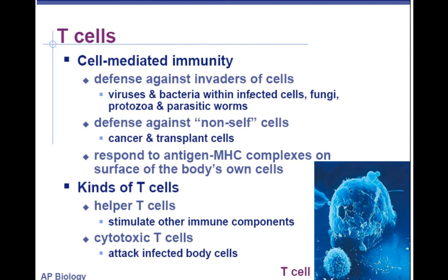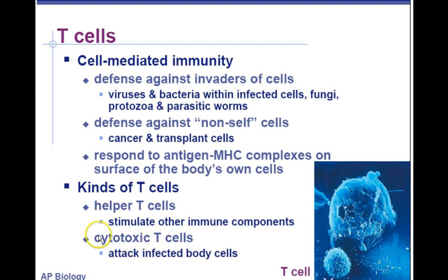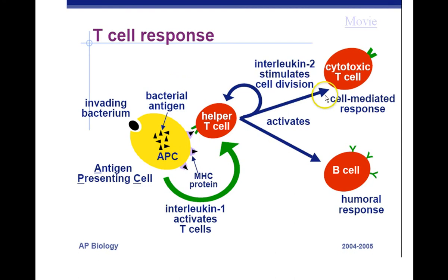Now for T cells — the other part of the third line of defense. This is cell-mediated immunity, going after cells rather than free-floating antigens. T cells target viruses and bacteria within cells, fungi, protozoans, parasitic worms, non-self cells, cancer cells, and transplant cells. There are two types to know: helper T cells and cytotoxic T cells. 'Cyto' means cell, 'toxic' means deadly — cytotoxic T cells can actually kill other cells. Helper T cells don't kill but they help the other parts of your immune system.